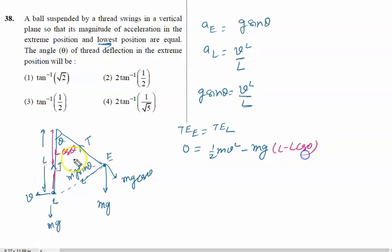So in the next step we will write half mv squared equal to mg L (1 minus cos theta). So m will be canceled and we can say v squared upon L is given by 2g (1 minus cos theta).